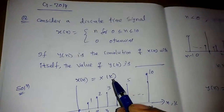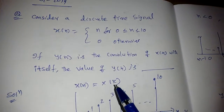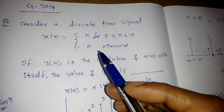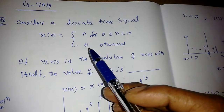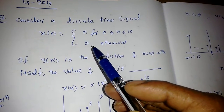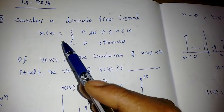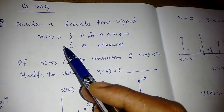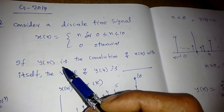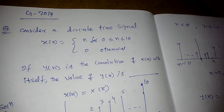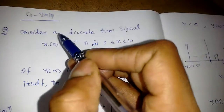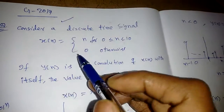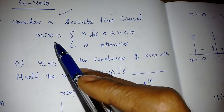Good morning everyone. We are going to discuss the convolution of two discrete time signals. In the previous lecture we saw convolution of two continuous signals. This question came in the year 2014.